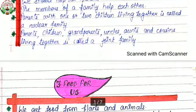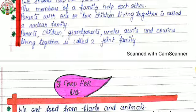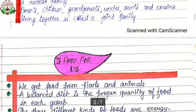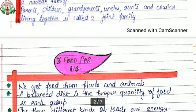Parents with one or two children living together is called a nuclear family. Parents, children, grandparents, uncles, aunts and cousins living together is called a joint family.